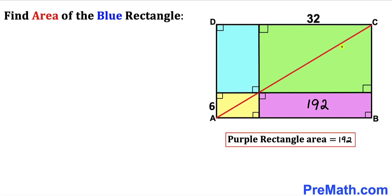Let me call each half of the green rectangle area x, so both parts are x. The diagonal also divides the yellow rectangle into two equal parts; let me call each part y. Let me call the area of the blue rectangle uppercase A.